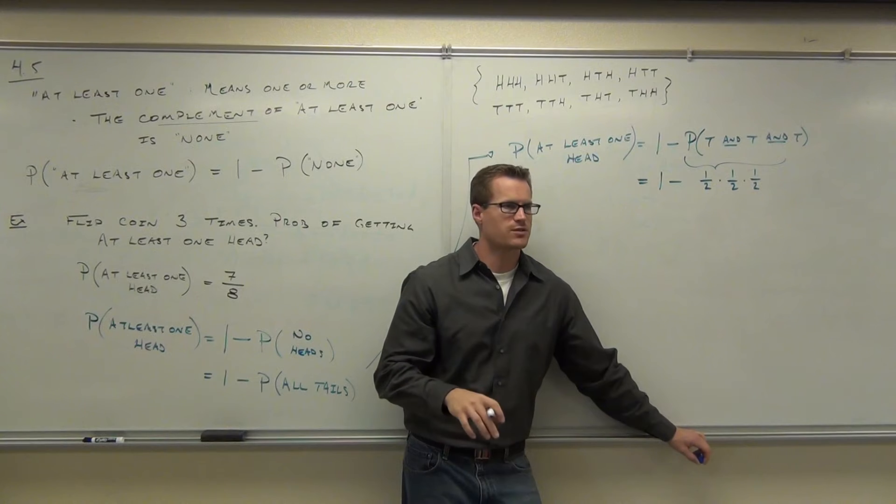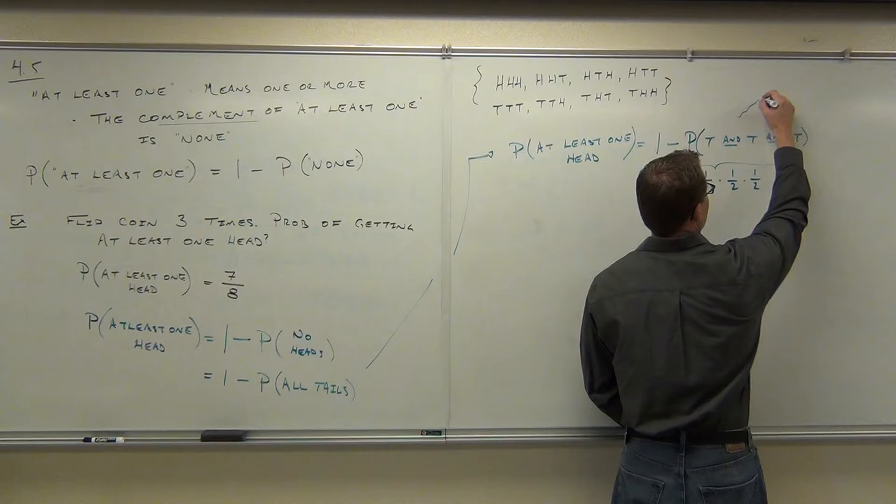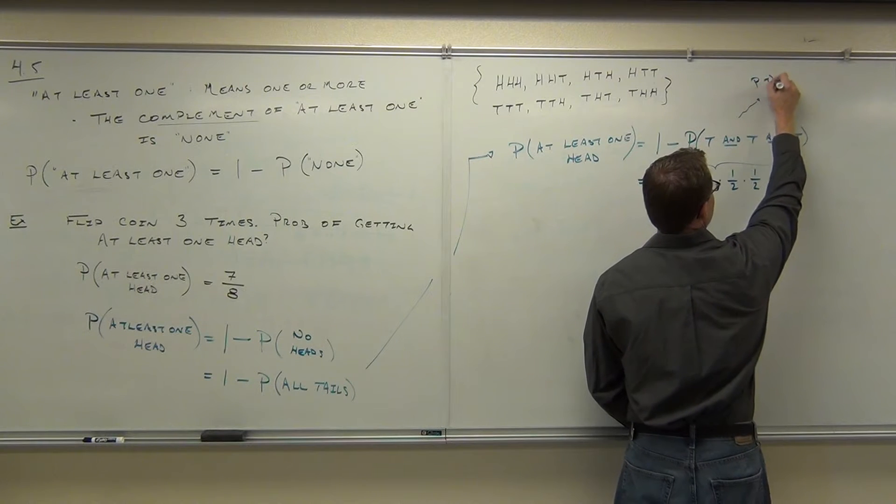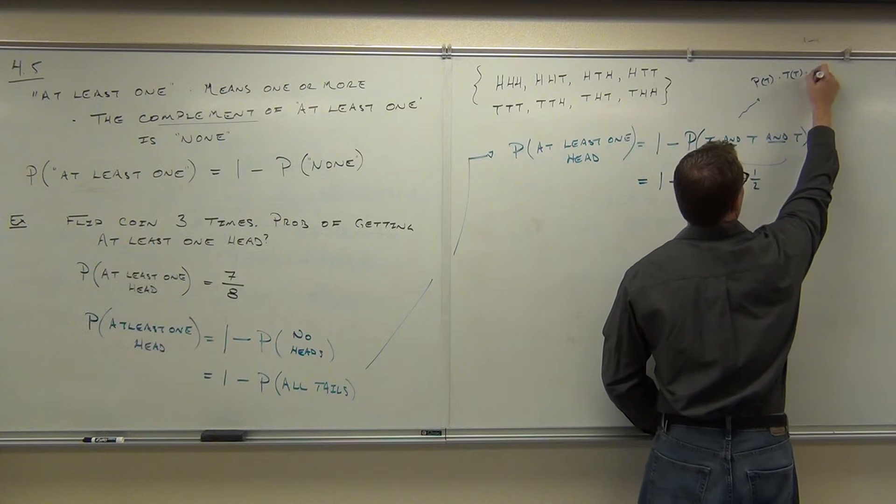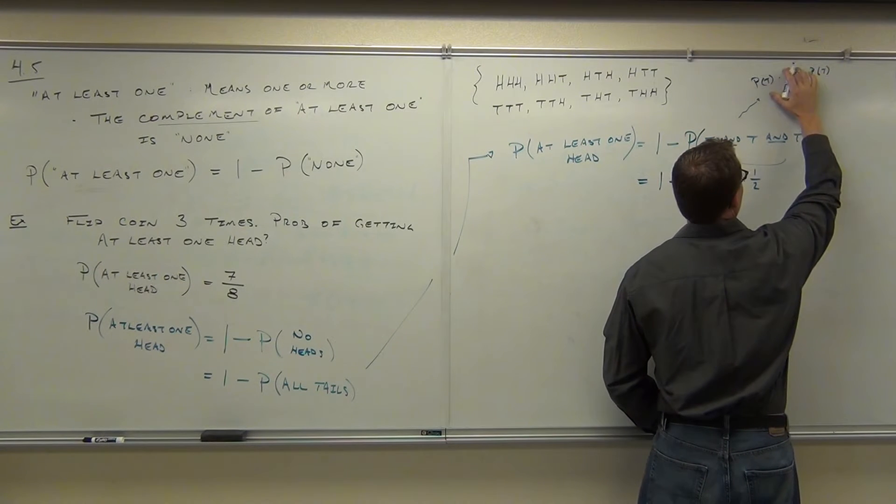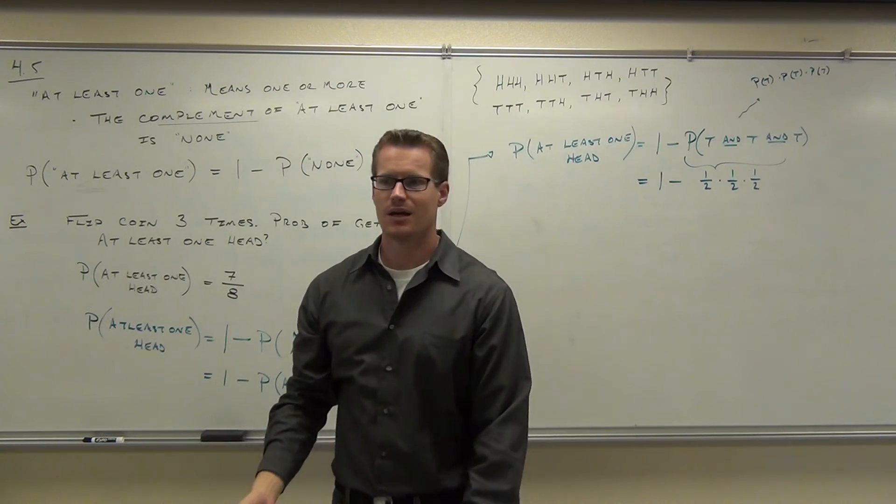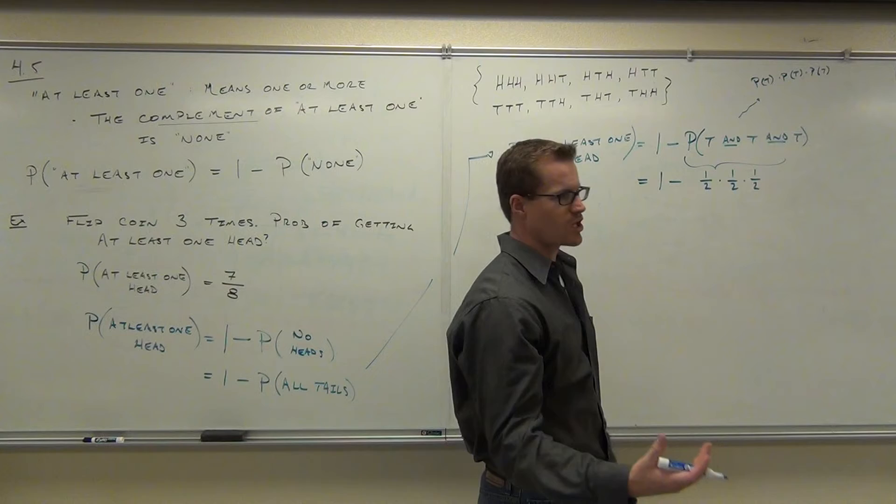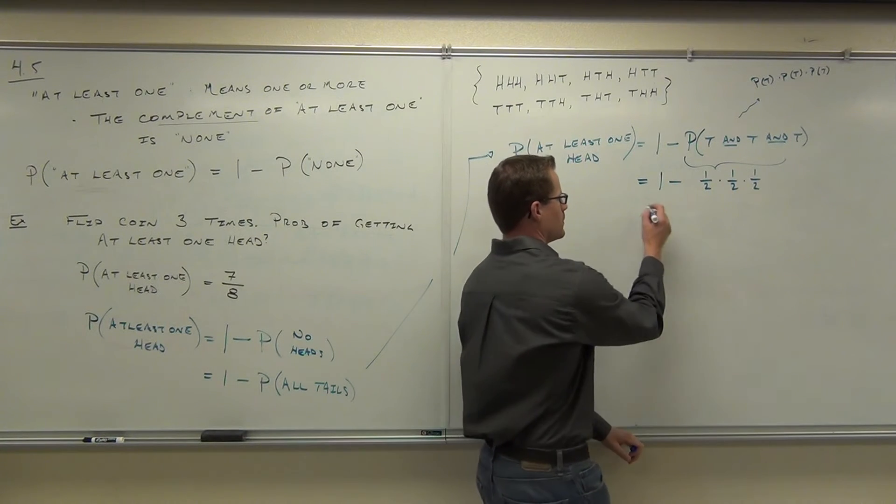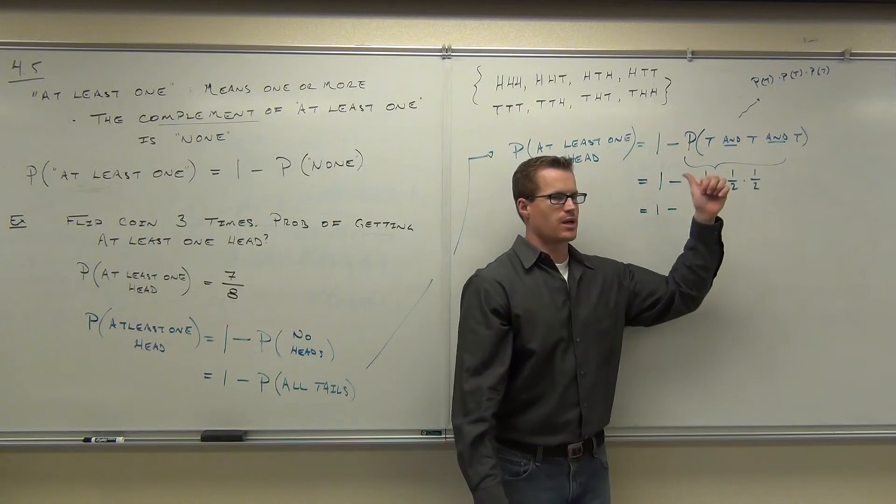Are you still with me here, folks? Did you see where the one halves are coming from? Remember this, I can do the extra step here if you really want. This is the probability of T times the probability of a tail, times the probability of a tail, which is what you're doing. They just all happen to be independent, and you don't need the conditional probability on that because it doesn't change. So, what is one half times one half times one half?